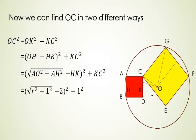AO is equal to R that is radii. AH is equal to 1. Since the AB is a side of the square which is 2 units and hence the half of the side is 1. And HK is 2 which is equal to the side of the square. And again KC is equal to 1, half of the side. Here we get OC square is equal to under root R square minus 1 square minus 2 whole square plus 1 square.